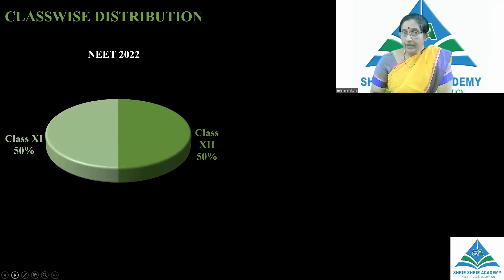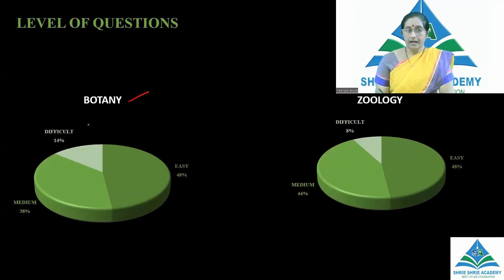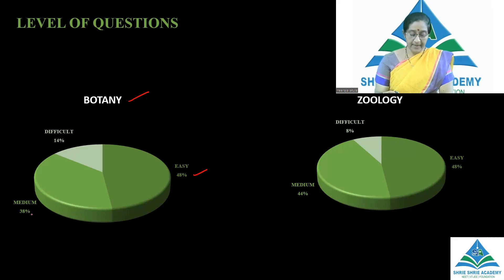Coming to the class-wise distribution: from 11th standard, 15 questions appeared, and from 12th standard, 15 questions appeared. If we come to the level of questions in botany — easy level: 48%, medium level: 38%, and difficult level: 14%.